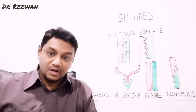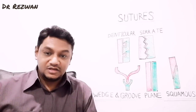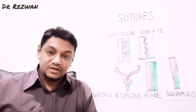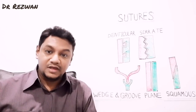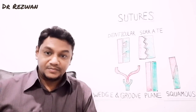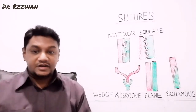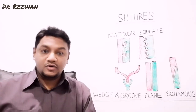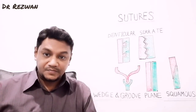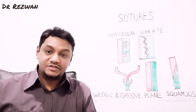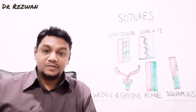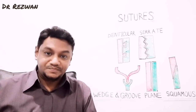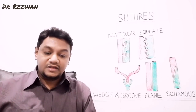The serrated variety is commonly found in the sagittal suture of our skull — you can remember the serrated variety by sagittal, as both start with 'S'. In the case of the denticulate sutural joint, the example is the lambdoid suture, which is found between the parietal bone and the occipital bone.